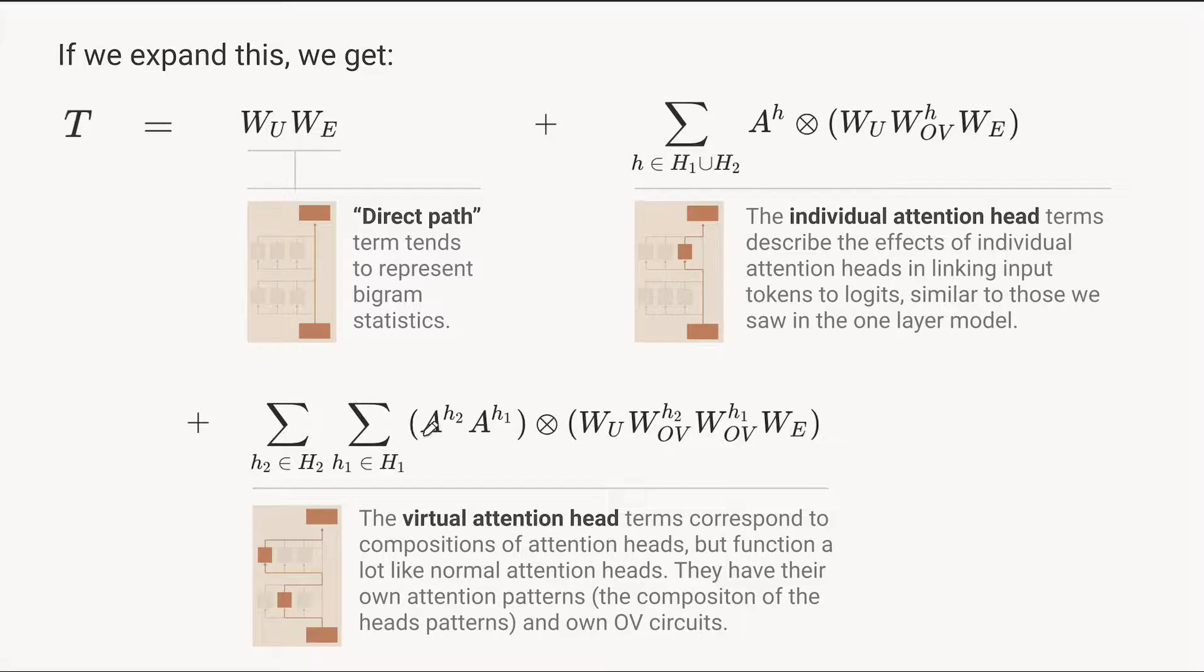And so virtual attention heads have this nice property. We get them through the mixed product identity that we were talking about earlier. They have an attention pattern of their own, which is the product of the two attention patterns. And they have a OV circuit of their own that describes if they attend to a particular token, what the effect will be. And it's just the product of the first OV circuit and the second OV circuit.